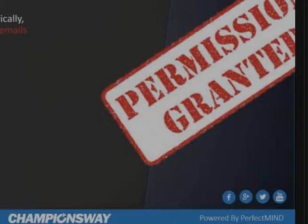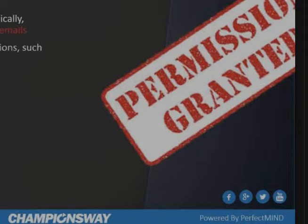When gathering consent, there are rules and regulations about what should be included. The second type of consent is implied consent — consent that is inferred based on actions, such as having an existing business relationship. The legislation has put together a set of rules that allow you to communicate with a contact depending on the type of relationship you have, and we'll go over that in detail in a few moments.